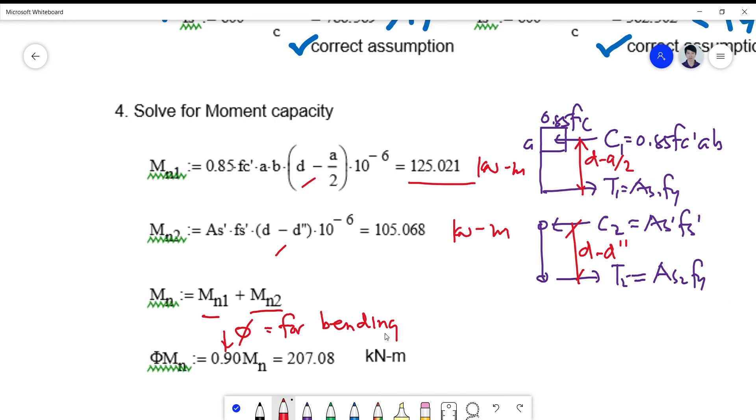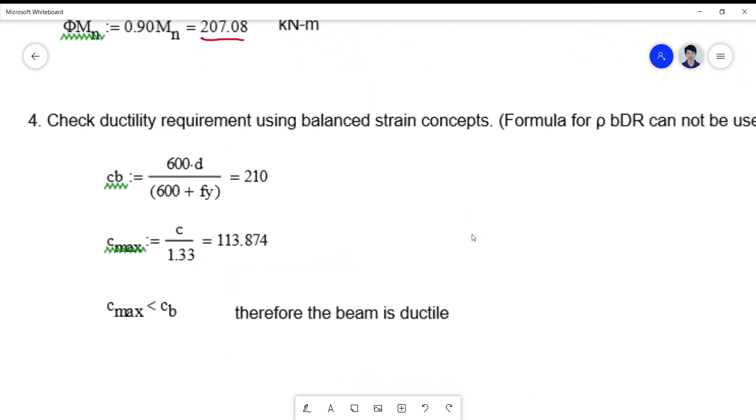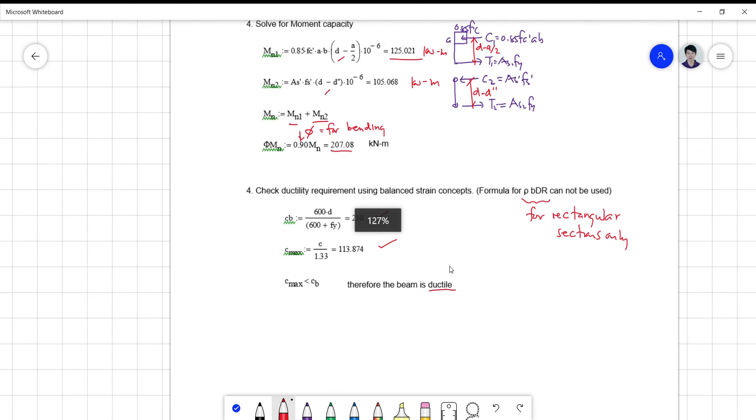This is for bending, so we now have 207.08. For the ductility requirement, using again balanced strain concept because we cannot use a rho BDR formula because this is only good for rectangular sections only, so we use the basis of a balanced strain condition that Cmax must be less than Cb always. Checking it, this is 210, Cmax is 113, so 113 less than Cb - therefore the beam is ductile.